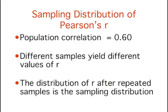Naturally, different samples of 12 students would yield different values of r. The distribution of values of r after repeated samples of 12 students is the sampling distribution of r.